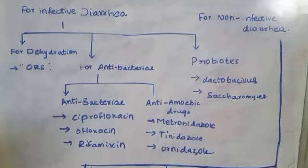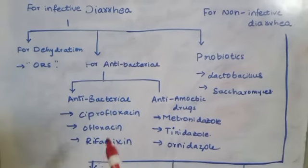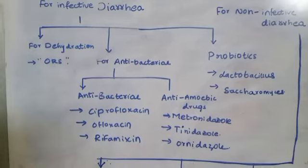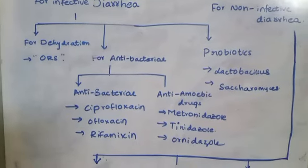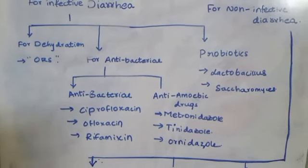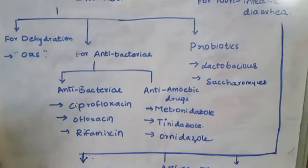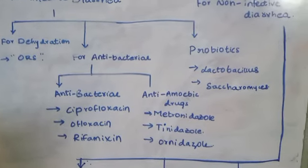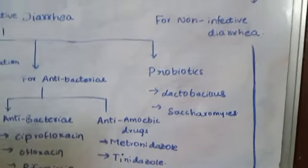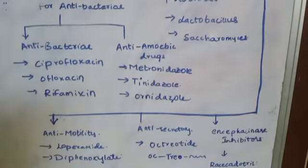In terms of probiotics, those are lactobacillus and saccharomyces. Remember, ciprofloxacin and ofloxacin are also used as antibiotics in INH as well as urinary tract infections, classified under generation 2.